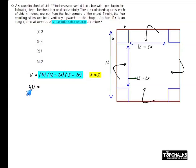then 4v must be equal to 4x into 12-2x into 12-2x. Let me call this as a, b and c.